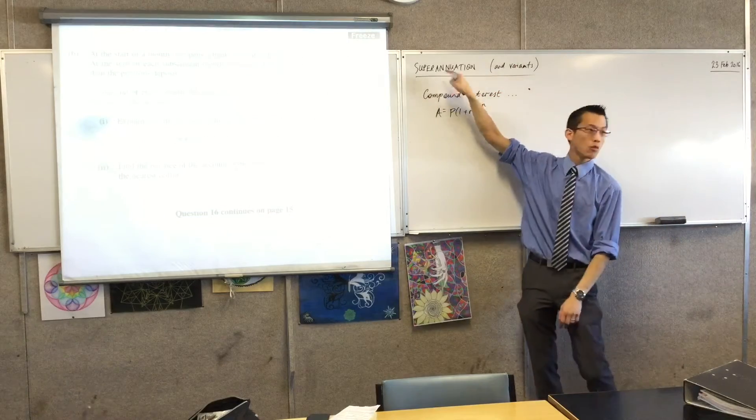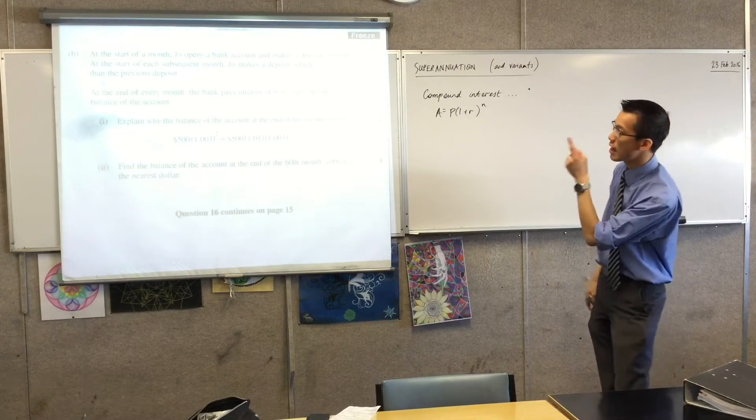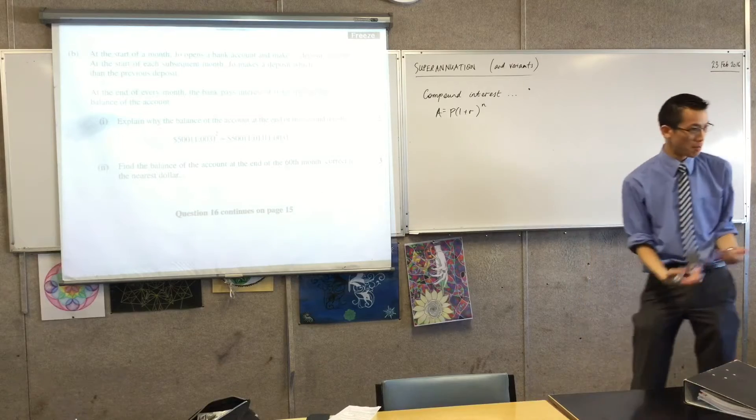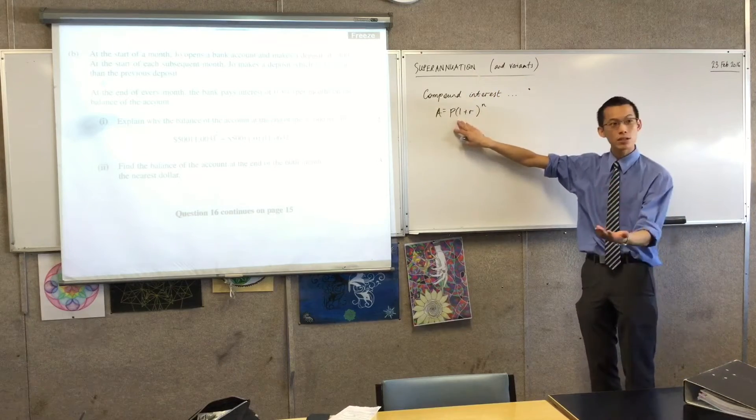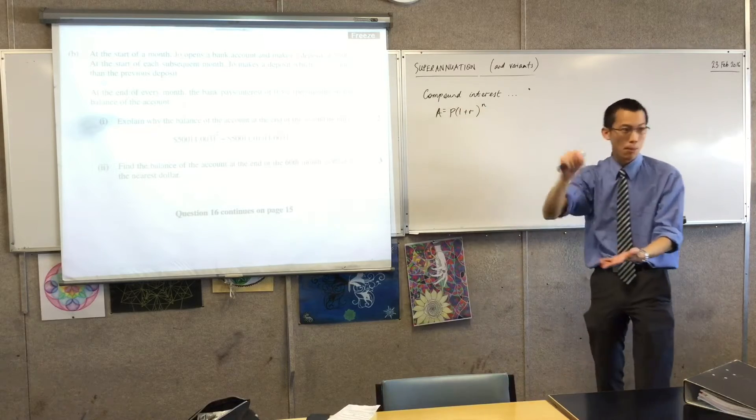So being that you've got like, the first month's bit of money, and then the second month's, and the third month's, and the fourth month's, and each one's growing interest at its own rate, that's where the GP forms, and that's why this is its own thing. So even though not all of them will be explicitly called superannuation, such as this question, it's just a deposit, they all function in the same way. I'm putting money in, it's getting interest, but I don't just do that, I keep on putting more.